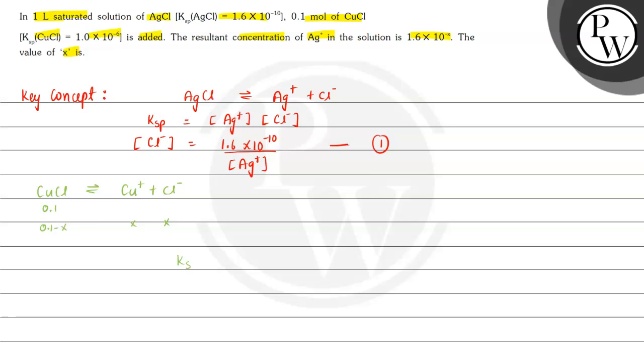So Ksp for CuCl will be equal to concentration of Cu+ multiplied by concentration of Cl-. Ksp for CuCl is given as 1 × 10^-6 equal to Cu+ and Cl- concentration x, so this will be x². From this we can find the value of x, which is concentration of Cl-, equal to 10^-3.